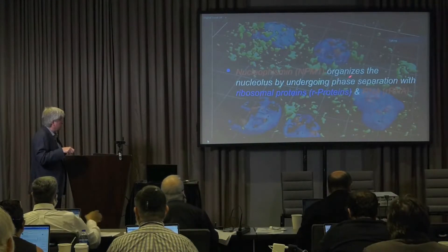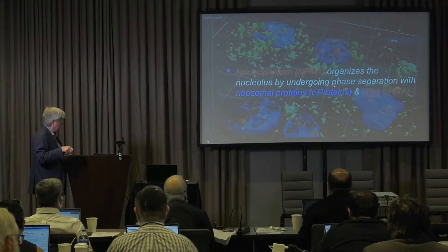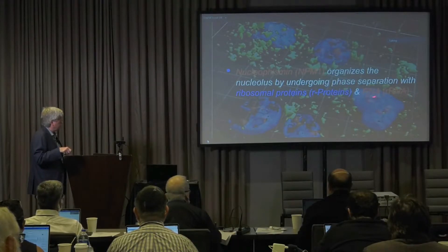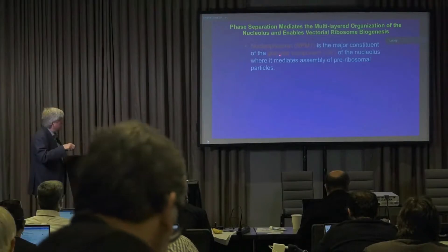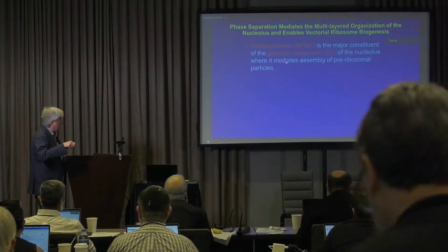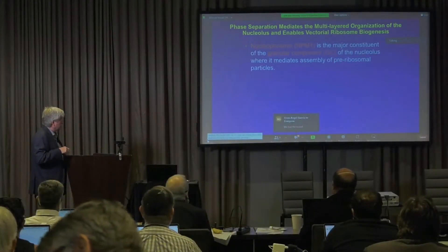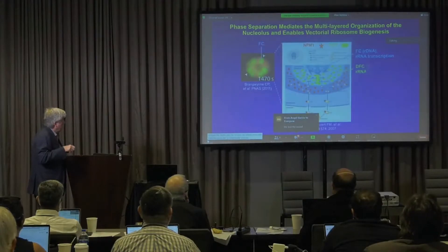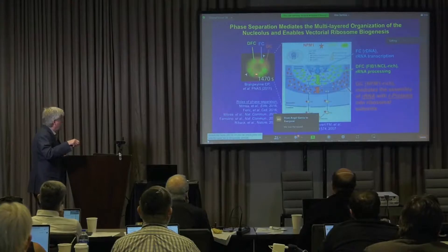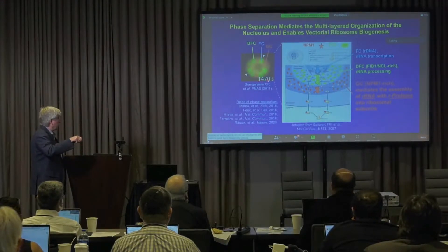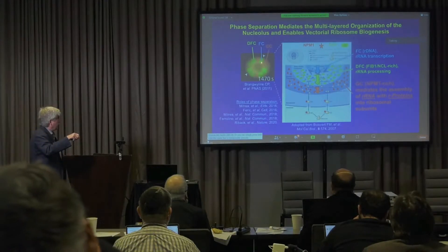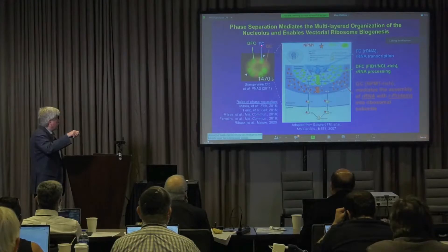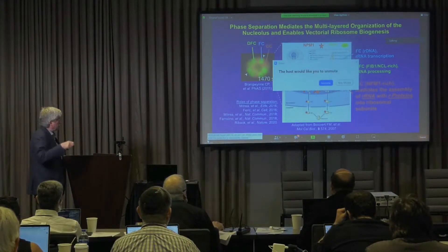I'm going to talk about the role of nucleophosmin as an organizer of the nucleolus, which it does through phase separation with ribosomal proteins as well as ribosomal RNA. Nucleophosmin is the major constituent of the outer region of the nucleolus, called the granular component, where it mediates the assembly of pre-ribosomal particles. Shown on the left is an image of a nucleolus from early work by Cliff Branglin establishing the role of phase separation in the structure and dynamics of the nucleolus, and you can see three different regions. The fibrillar centers are at the very center of the nucleolus, where the genes for ribosomal RNAs are clustered.